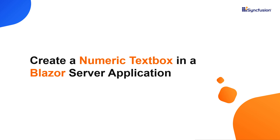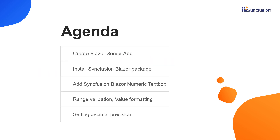Hi everyone. Welcome to this video on getting started with the Numeric TextBox component of Syncfusion in a Blazor server application. I will explain how to create a Blazor application and add the Syncfusion Blazor package, how to add the Syncfusion Blazor Numeric TextBox component, and then add prominent features like range validation, value formatting, and setting decimal precision. To explore more features, visit our website link provided in the YouTube card.